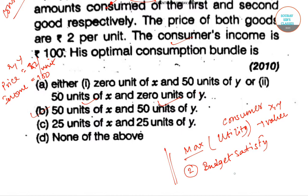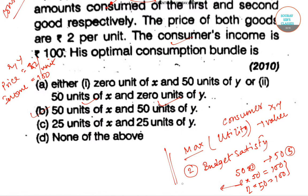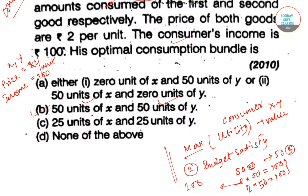If we take both 50 units of good x and 50 units of good y, then at 2 rupees each, spending on x is 100 and on y is 100, giving a total of 200. But our income is only 100, so we will never purchase this option.